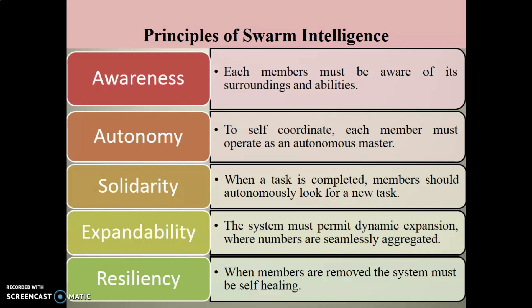The third principle is Solidarity — when a task is complete, members should autonomously look for a new task. Different members can join different Swarms; once a goal is complete, each member is free to look for a new one. The fourth is Expandability — the system must permit dynamic expansion where members are seamlessly aggregated at any point. Similarly, when members are removed, the system must be self-healing, meaning it must be capable of functioning without that particular member.